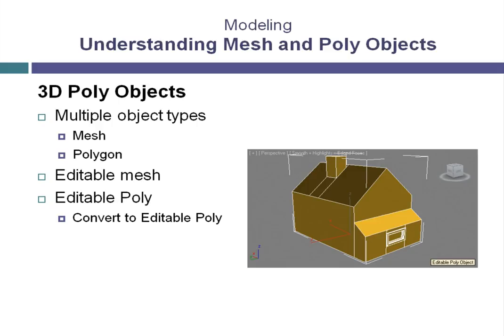We will be concerned with the editable poly object, which allows us to use the graphite modeling tools available in 3ds Max. The first thing we will do is take an object and convert it to an editable poly object. You can convert object types back and forth in 3ds Max, though there are some limitations depending on which types of objects you are converting. We are going to convert using the editable poly option.